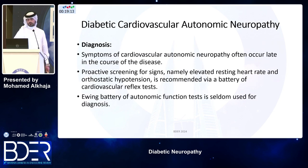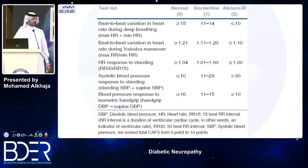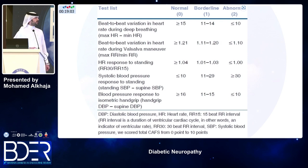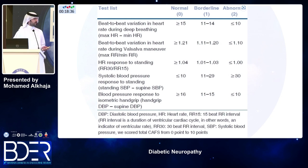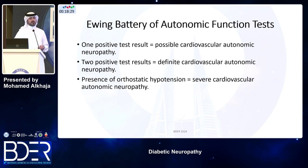The Ewing battery diagnoses cardiovascular autonomic neuropathy using five tests: beat-to-beat heart rate variation with deep breathing, beat-to-beat variation during the Valsalva maneuver, heart rate response to standing, systolic blood pressure response to standing, and blood pressure response to isometric hand grip. One abnormal result suggests possible cardiovascular autonomic neuropathy; two abnormal results confirm it; the presence of orthostatic hypotension indicates severe cardiovascular autonomic neuropathy.